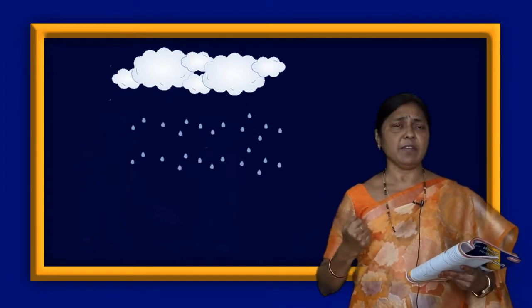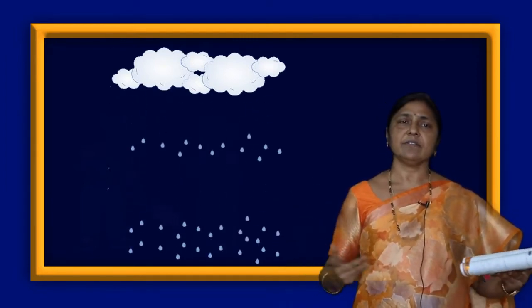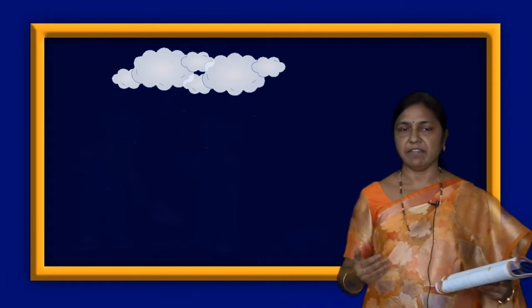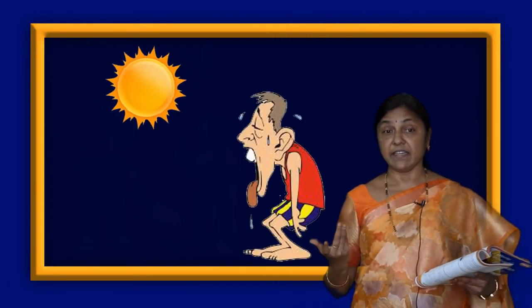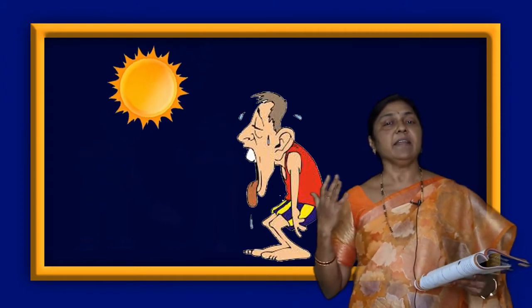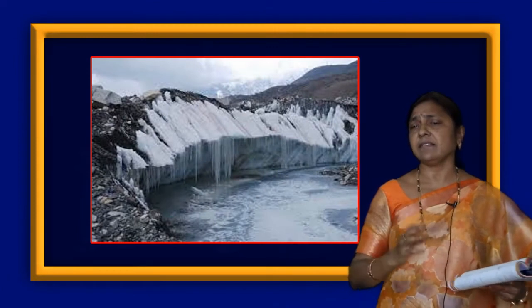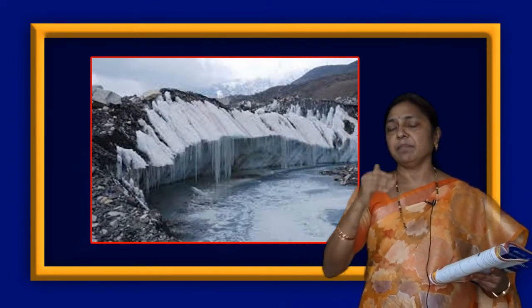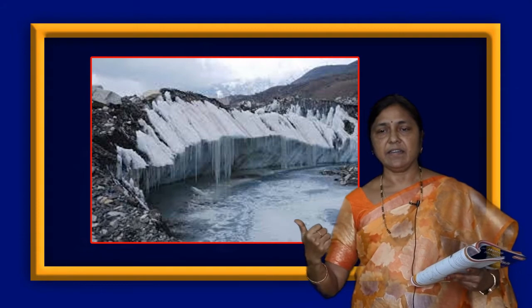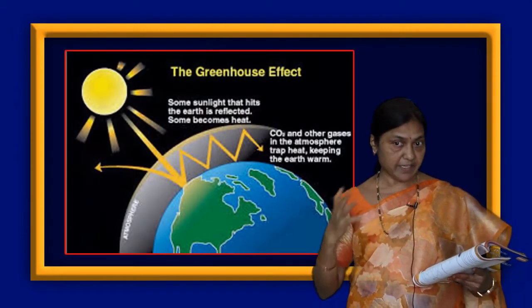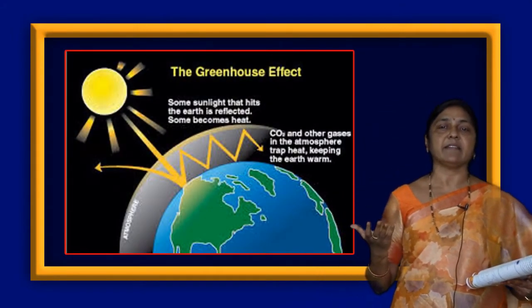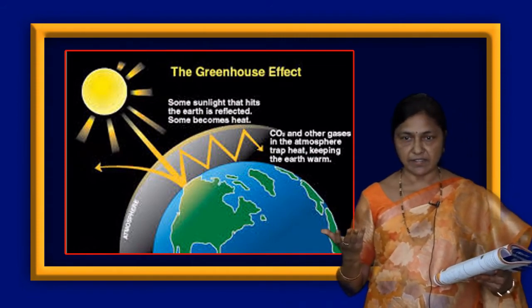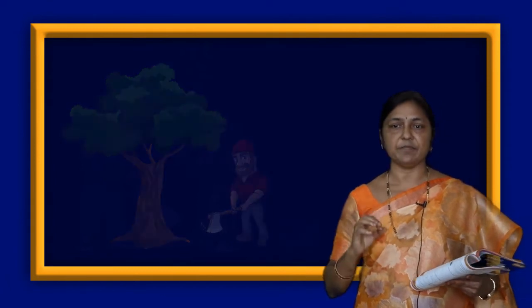When I was a child, there used to be a lot of rain. But nowadays we are not getting enough rain. The weather is getting hotter day by day. Not only that, in the Himalayas, the ice is melting year after year — because of the heat and the increasing carbon dioxide. This is the greenhouse effect. In order to stop that, we should not cut the trees; we should plant trees.